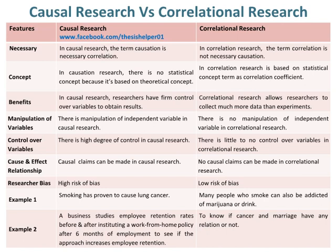Example 1 of causal research: smoking has been proven to cause lung cancer. Whereas example 1 of correlational research: many people who smoke may also be addicted to marijuana or drink. Example 2 of causal research: a business studies employee retention rates before and after instituting a work-from-home policy after six months of employment to see if the approach increases employee retention. Whereas example 2 of correlational research: to know if cancer and marriage have any relation or not.